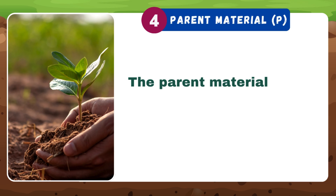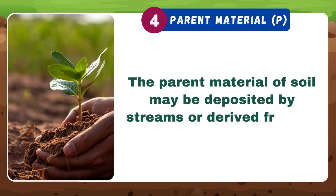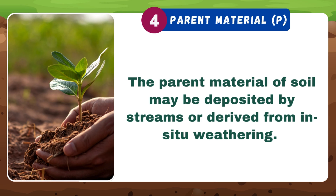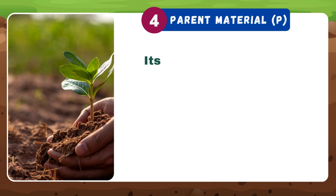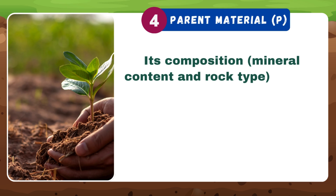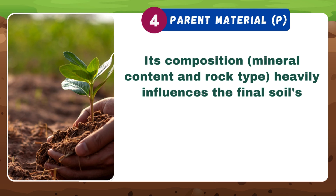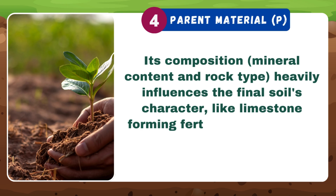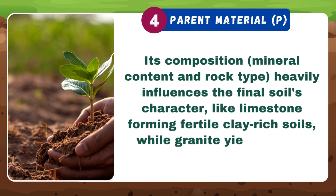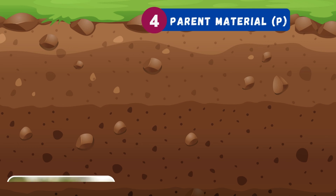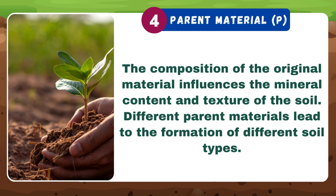The parent material of soil may be deposited by streams or derived from in-situ weathering. Its composition, mineral content, and rock type heavily influence the final soil character — for example, limestone forms fertile, clay-rich soils, while granite yields sandy, acidic ones. The composition of the original material influences the mineral content and texture of the soil, and different parent materials lead to different soil types.